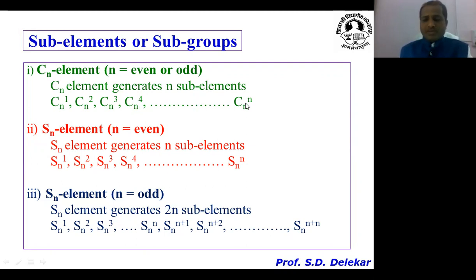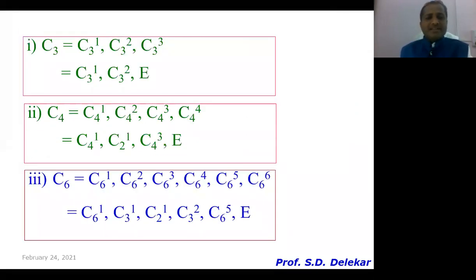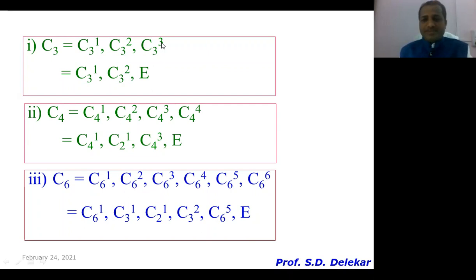For example, when you take a C3 element, each C3 generates n subelements — here n is equal to 3 — meaning 3 subelements: C3¹, C3², and C3³.